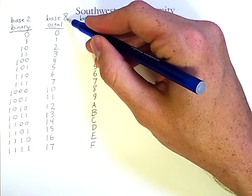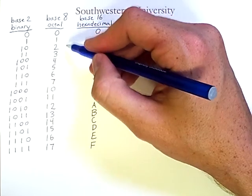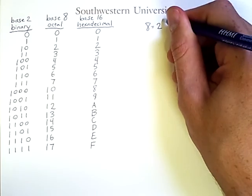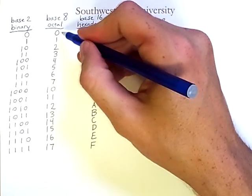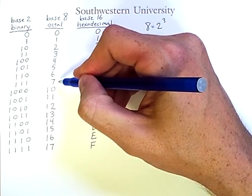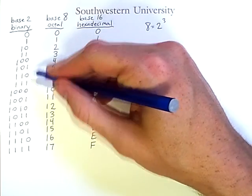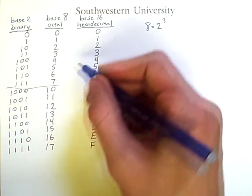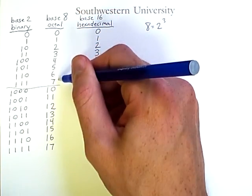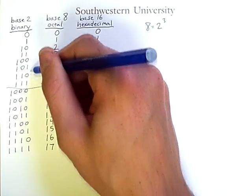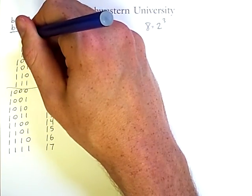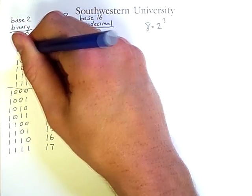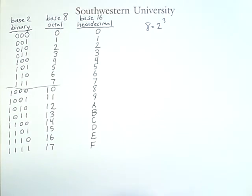Because 8 is equal to 2 raised to the 3, each octal digit can be represented using exactly 3 binary digits, and that is shown by this transition here. Each of the possible octal digits takes 3 binary digits if you pad the left of each of the numbers that have fewer than 3 binary digits.